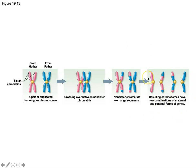We have one offspring that's going to have a completely maternal chromosome, one that's going to be a combination — mostly maternal with a little bit of paternal DNA, one that's mostly paternal with a little bit of maternal DNA, and one completely paternal chromosome. This is also why you can look significantly more like one of your cousins than maybe even your own sibling or even your parents.